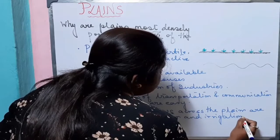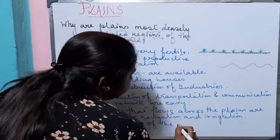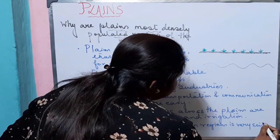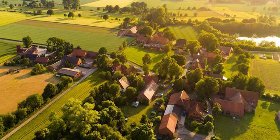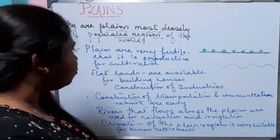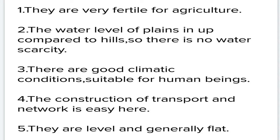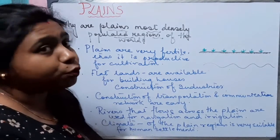As the plains are flat land, construction of transportation and communication networks is easy. The many rivers that flow across the plains are used for navigation and irrigation. Most importantly, the climate of the plains regions is very suitable for human settlements.